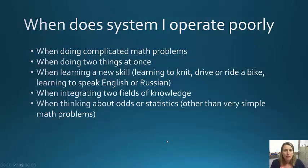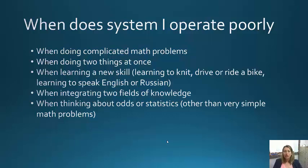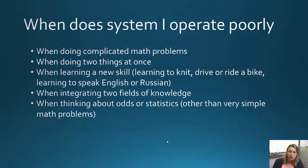When does System 1 operate poorly? System 1 doesn't do well with any complicated math problems, and it doesn't do well when you're trying to multitask — multitasking calls upon System 2. Learning any new skill — knitting, driving, a new language — requires System 2. Integrating two fields of knowledge, thinking about odds or statistics — humans' intuitions about odds and statistics are usually wrong. This is what keeps Las Vegas going: we're pretty bad with odds and statistics.